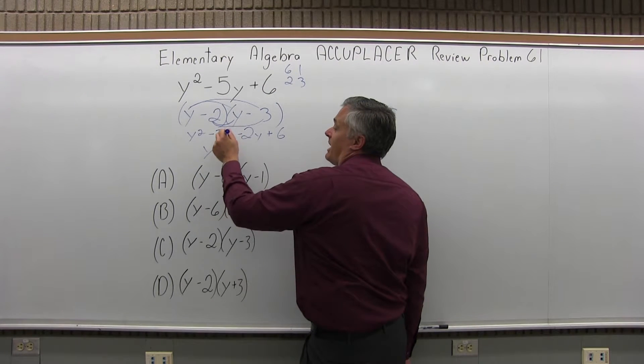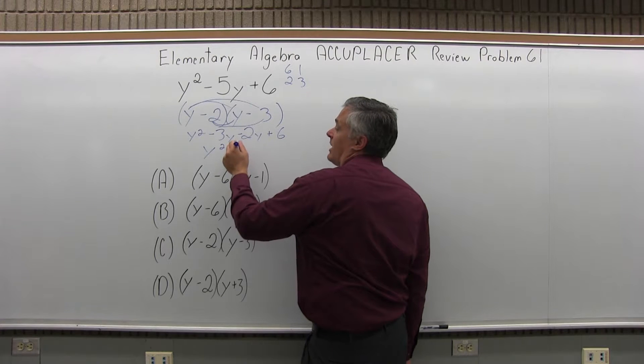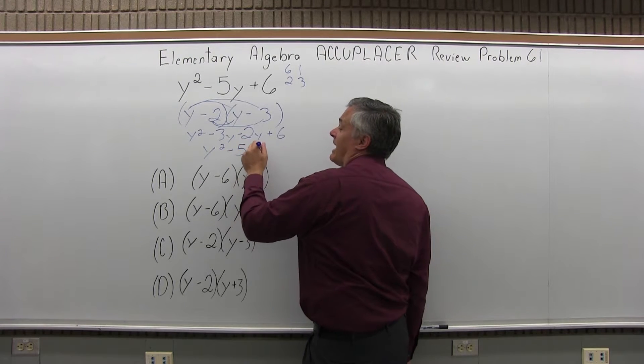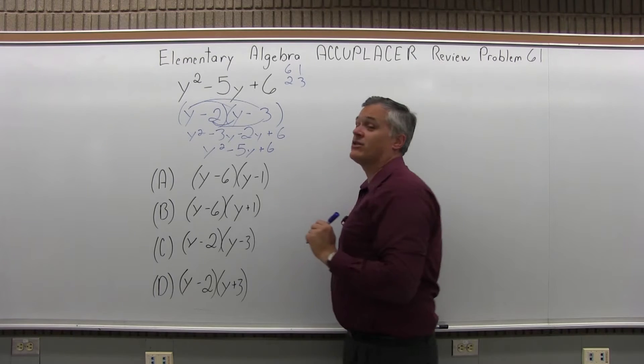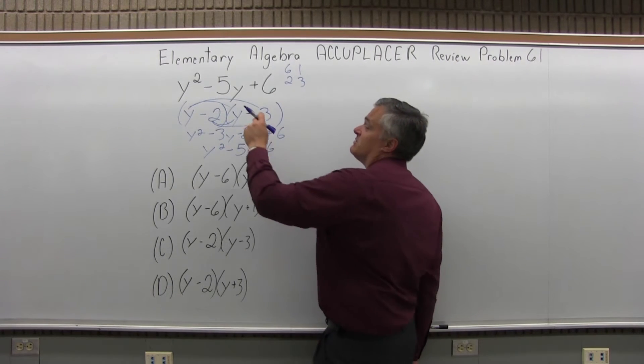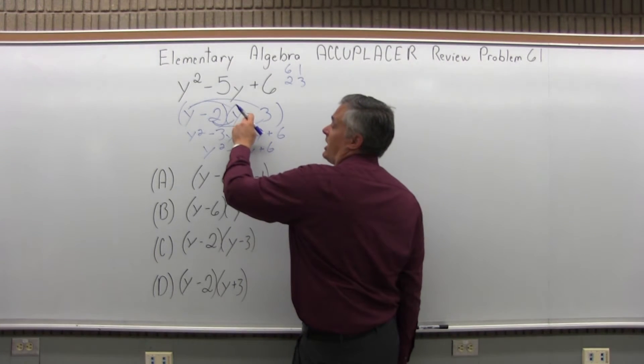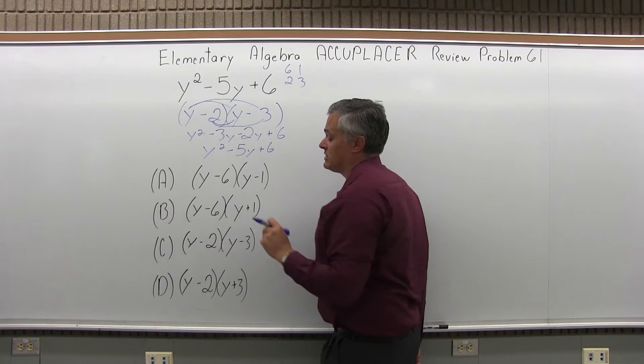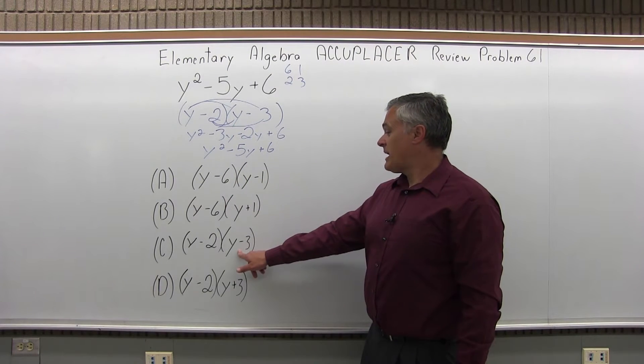When I combine my two terms in the middle, negative 3y and negative 2y, I do get negative 5y plus 6. So it does multiply to give me back the original question, which makes me certain that the answer is y minus 2 times y minus 3, which is one of my answers.